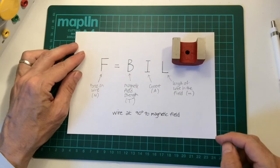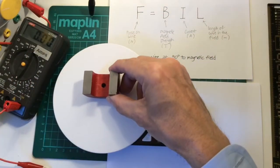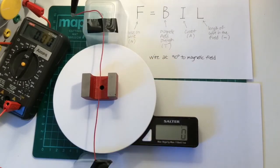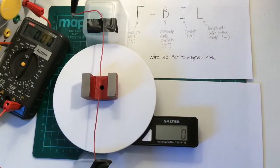We could use this formula to find out the strength of the field from a magnet. First we put our magnet on some scales and we set the scales to zero. Then we connect a wire above the magnet and we measure the length of the wire that's in the field. 27 millimetres.